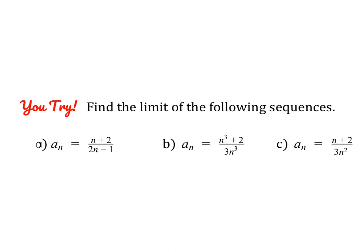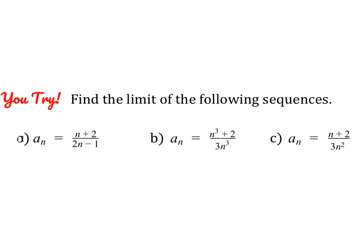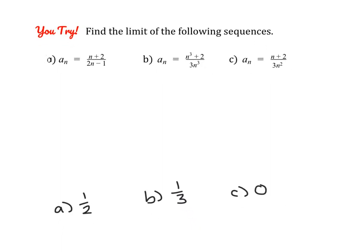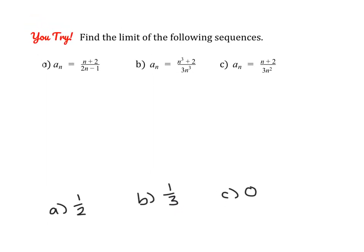Go ahead and pause the video and give these three a try. The answers are: 1 over 2, then 1 over 3, and for the last one the degree is larger on the bottom, so the limit is 0.